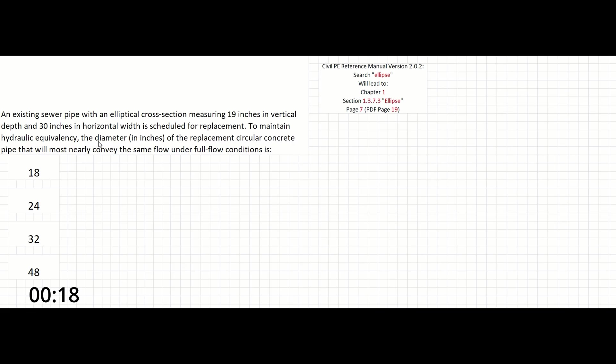To maintain hydraulic equivalency, the diameter in inches of the replacement circular concrete pipe that will most nearly convey the same flow under full flow conditions is: 18 inches, 24 inches, 32 inches, or 48 inches.